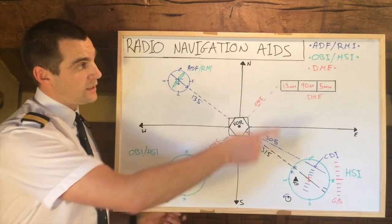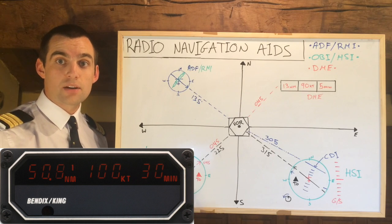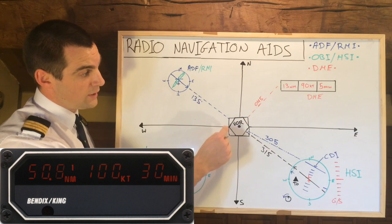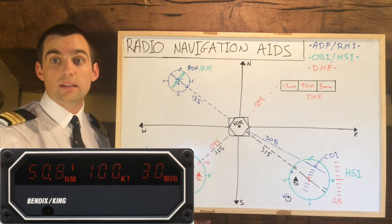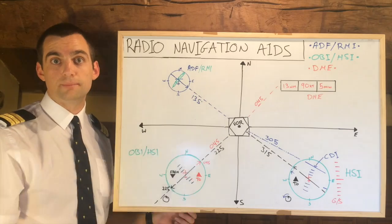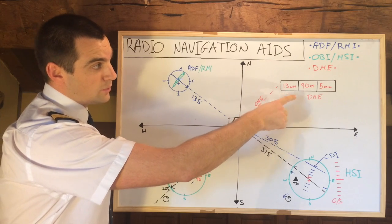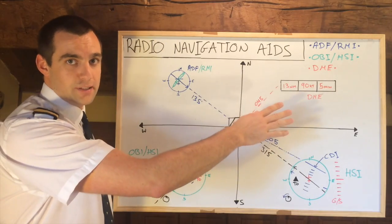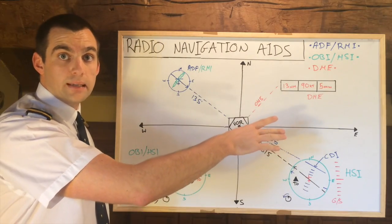DME, which stands for Distance Measuring Equipment, is essential for IFR navigation as well. This is a VOR DME — the VOR would only be the hexagon, and if it's a VOR DME it would have a square around it as well. These DME transponders are normally co-located next to NDBs or VOR stations corresponding with the same frequency, allowing aircraft to tune one frequency and get all the information needed. Normally on the DME indicator you will have three pieces of information: distance — for example 13 nautical miles — speed, for example 90 knots, and sometimes a time.